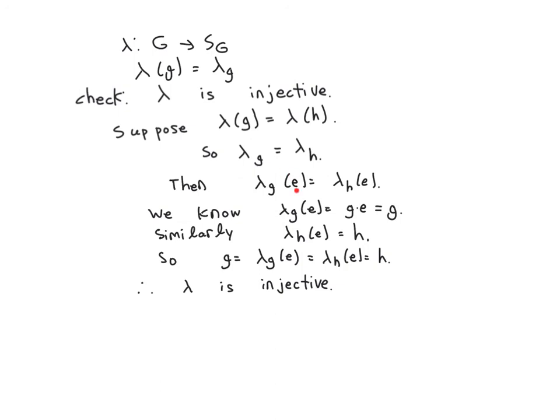So you can look, what happens when you look at lambda sub G of E, the identity, and lambda sub H is the identity. These have to be equal, because these functions are equal. Lambda sub G, the identity, is G times the identity is G. This part's always true for any permutation coming from this construction. You can actually figure out which group element you came from by looking at what's next to the identity in the permutation.